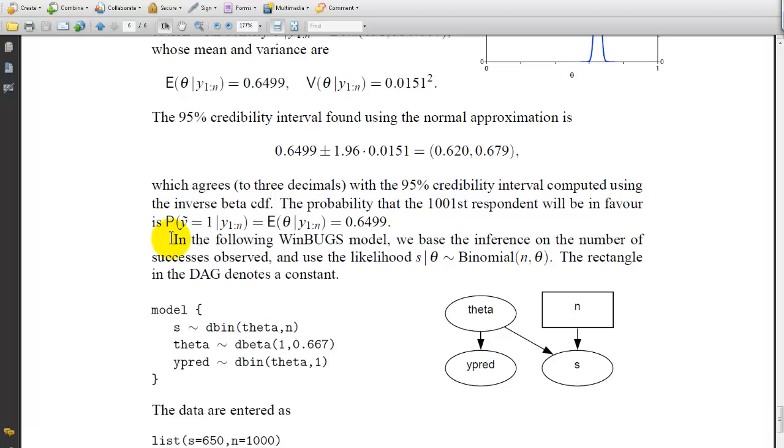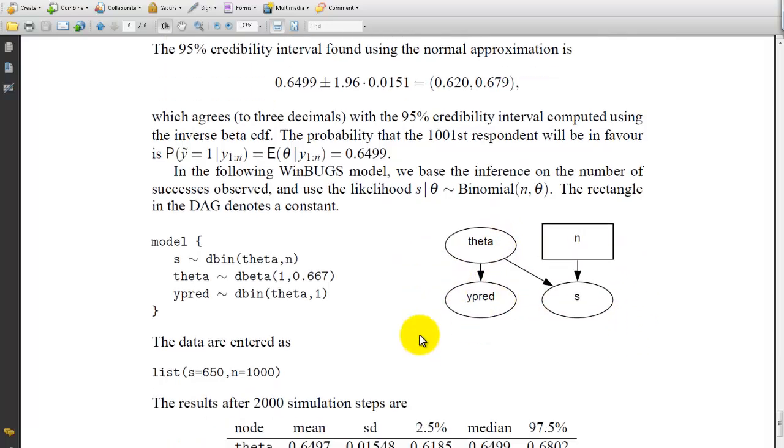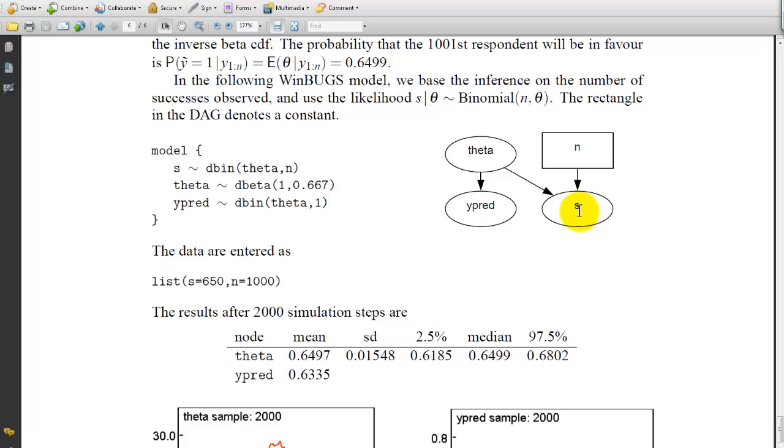In the following WinBUGS model we base the inference on the number of successes observed and use the likelihood S given beta, but it's a binomial distribution n and theta. The rectangle in the DAG notice the constant. So here's the DAG right here. So we have a distribution S and we have a constant n and a variable theta and then we have a y predicted. This is the particular outcome that we're looking for. And theta is related to that.